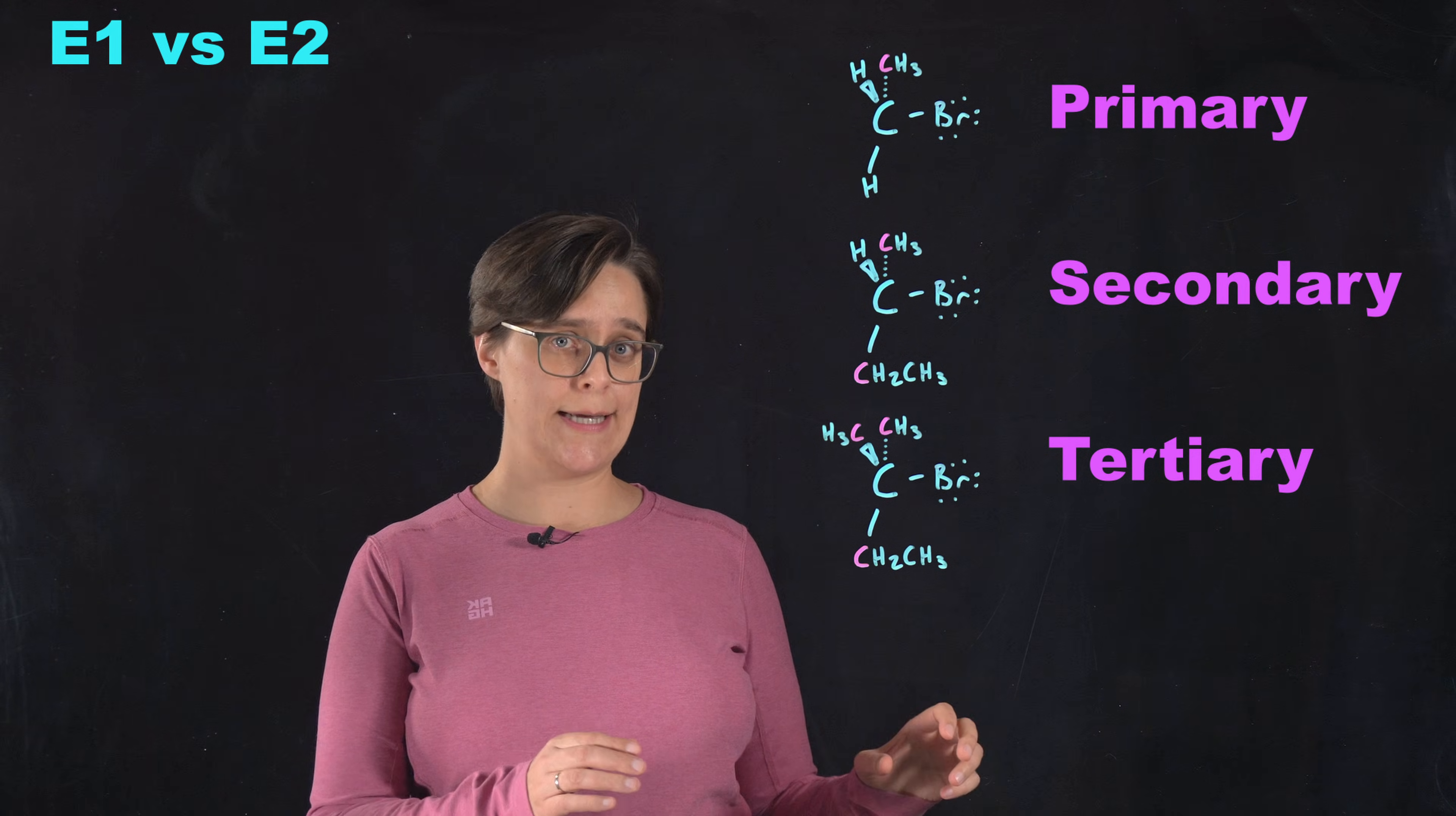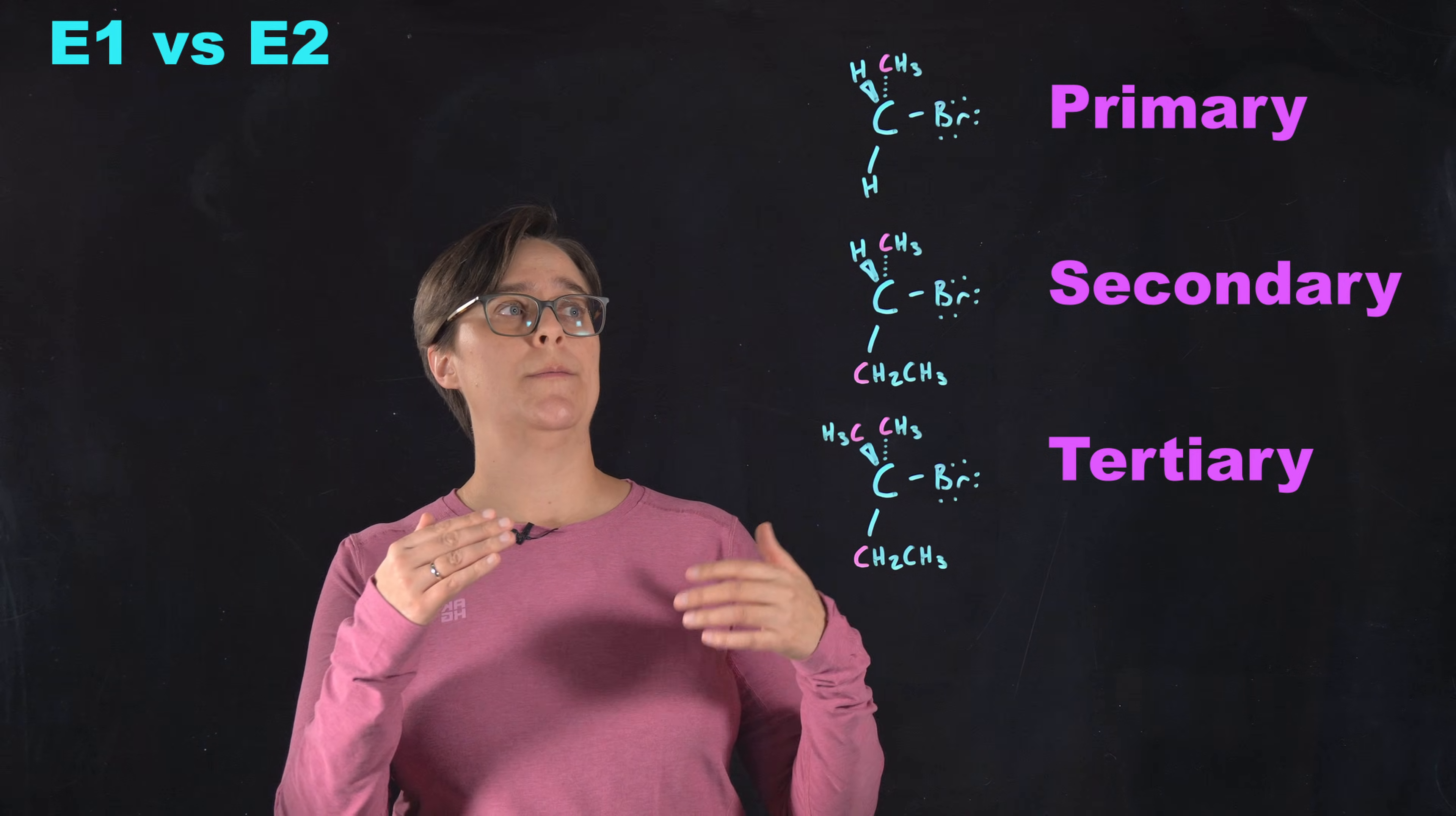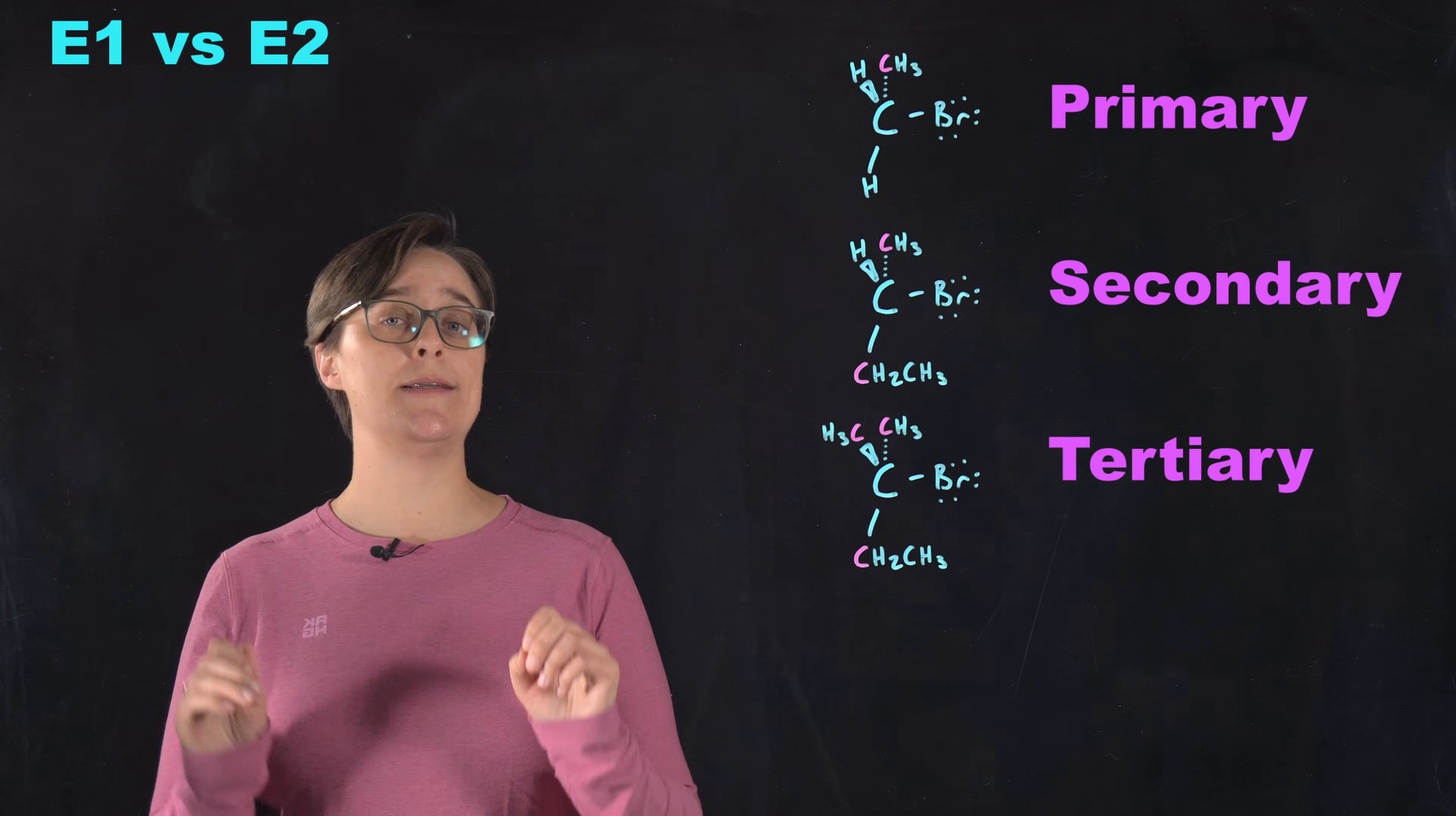If it's a secondary carbon, we get into a little bit of a hairy situation. Some textbooks will say it has to be E2 because secondary carbocations are unstable. Other textbooks will say E2 is much more likely because it's harder to get E1 to happen. But if it's a tertiary carbon, either E1 or E2 can happen. But in both that secondary and tertiary state, what tips the scales is the base.